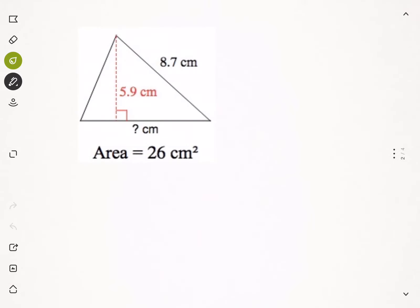So, step one. First, I'm going to write the formula, area equals half base times height. Once again, we're always going to look for this right angle because that will connect the base to the height. This 8.7, that's extra information that we don't need.